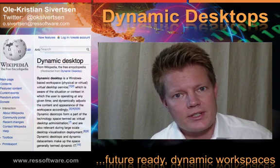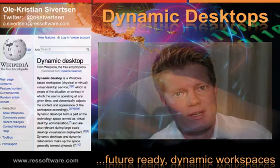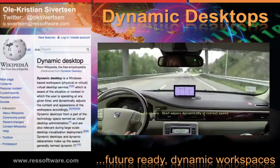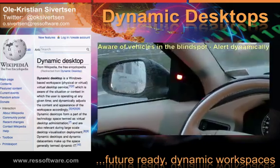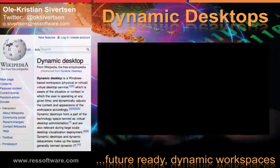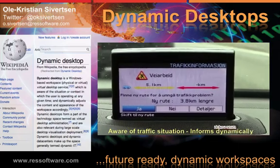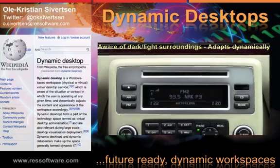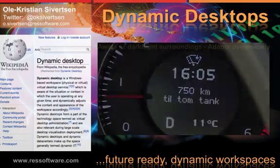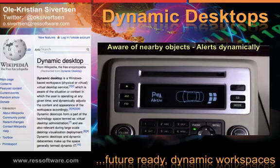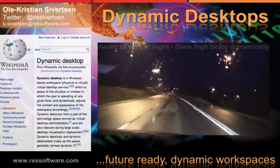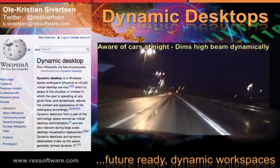Situational and context awareness isn't an entirely new concept. Take the modern car as an example. It may be aware of rain. It may be aware of vehicles in your blind spot. It may dynamically inform you of traffic situations. Console displays can change appearance in dark versus light surroundings. The car can be aware of nearby objects and alert dynamically. Some cars can even dim high beams when approaching other cars at night.